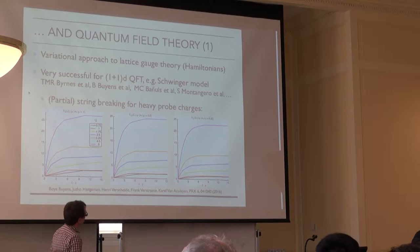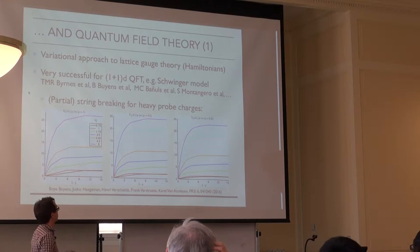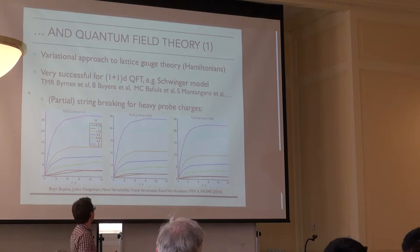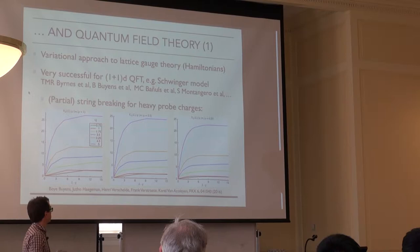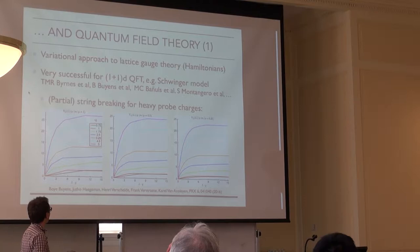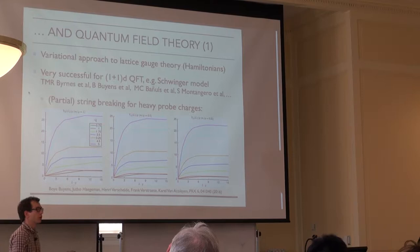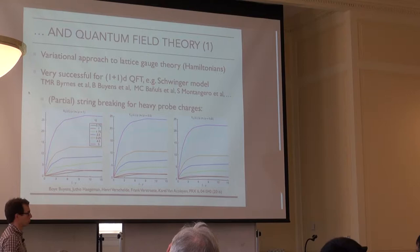Let me show some results about tensor networks and quantum field theory. Using these as variational methods, you can apply them to lattice gauge theories — not in the way Monte Carlo works, since we want a Hamiltonian framework working with quantum states. So we only discretize real space, not time. Matrix product states have been applied to one-plus-one dimensional quantum field theories. An example that has received a lot of attention recently is the Schwinger model, which is essentially one-plus-one dimensional QED, discussed also in yesterday's talk.